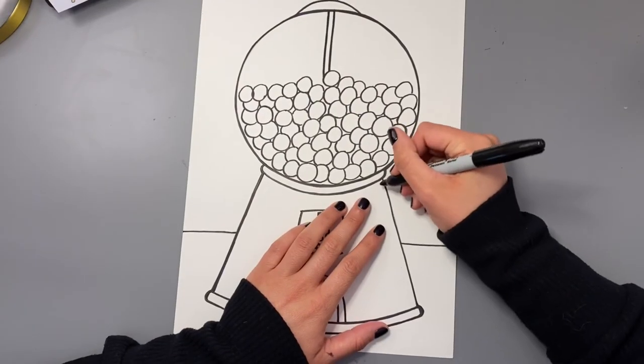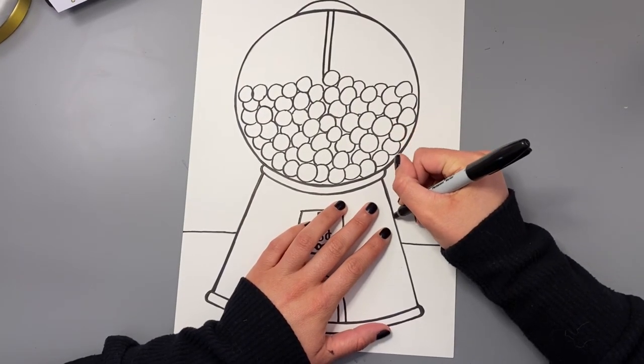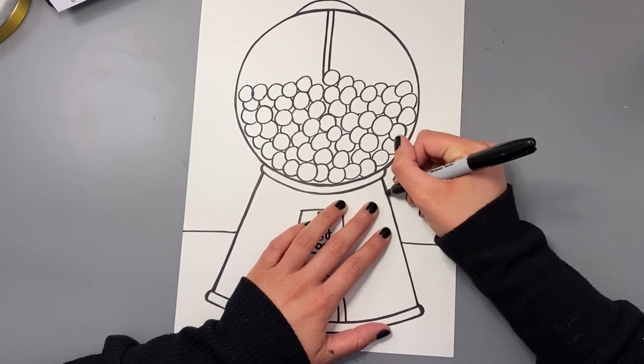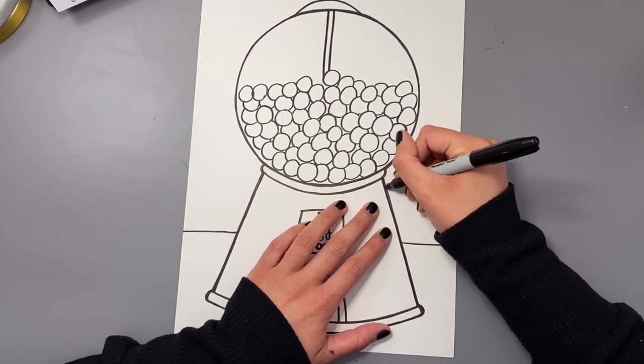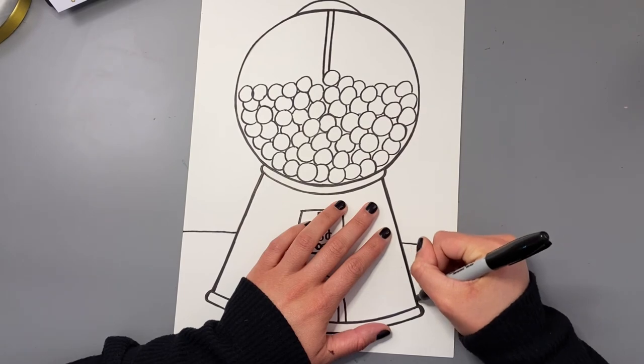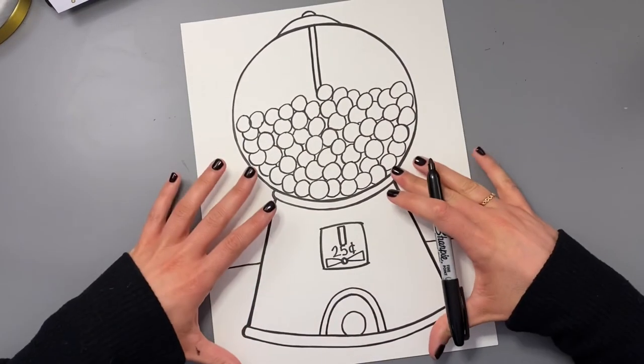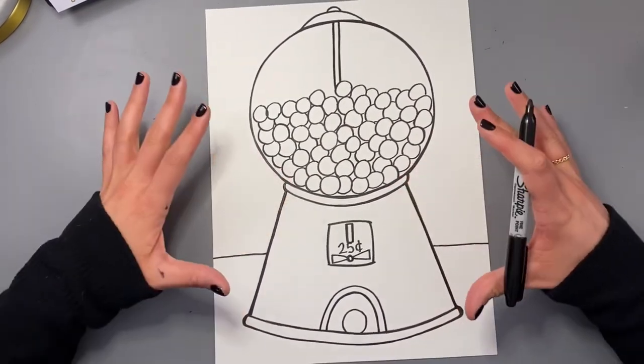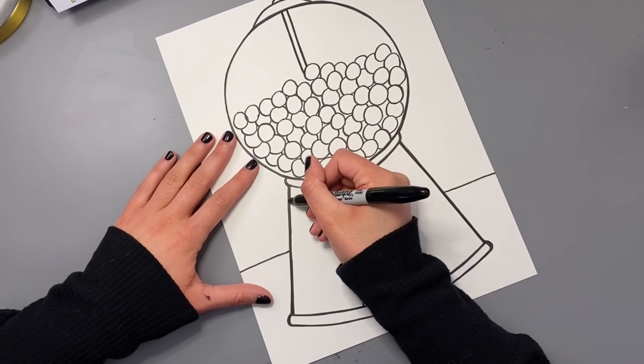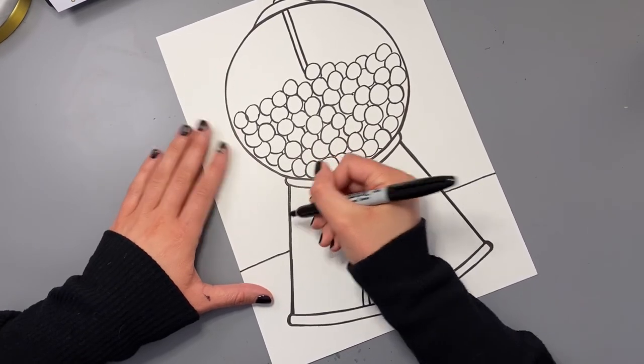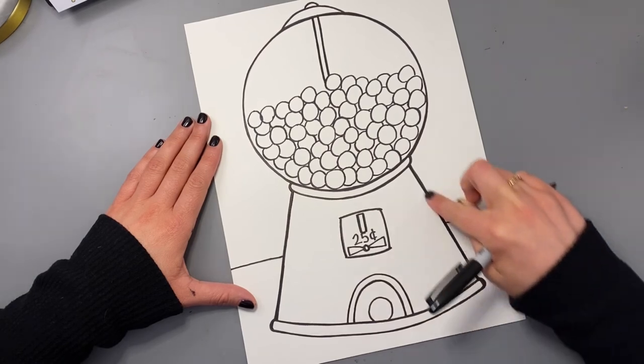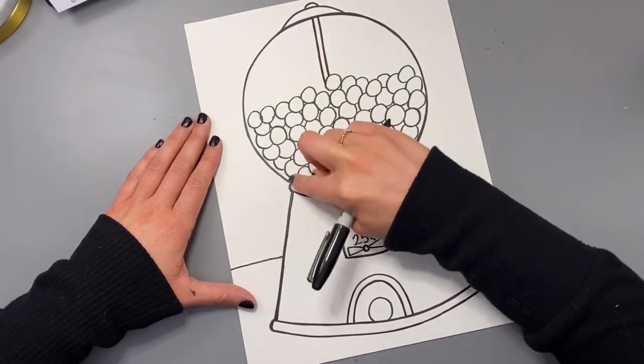I would suggest also going over the edges of your gumball machine a second time with your black marker so that your lines are a little bit thicker and bolder. And that will make your gumball machine really stand out. So you can do that again by just going over the lines a second time. I would just do this around the outside edge of your gumball machine.